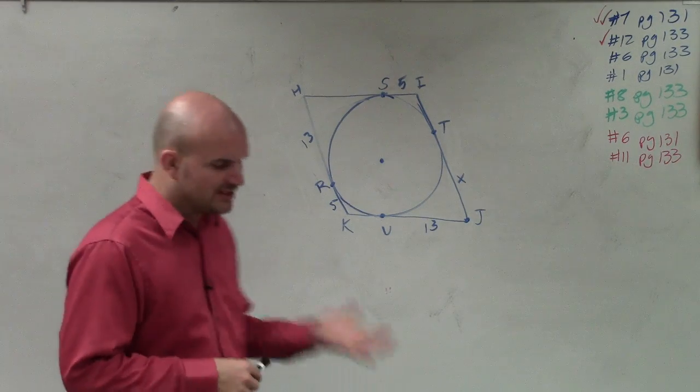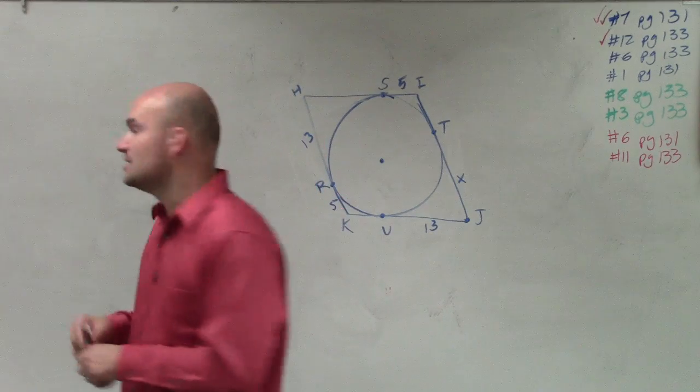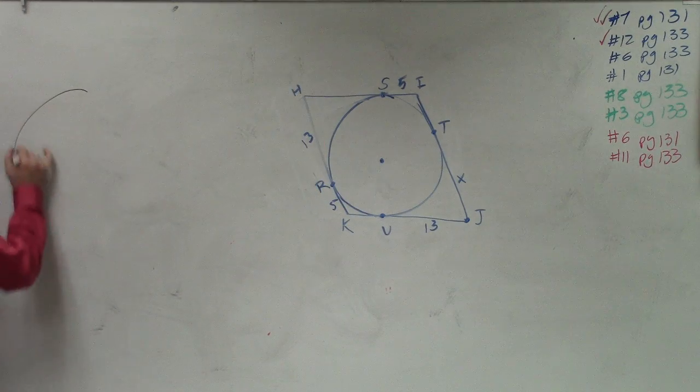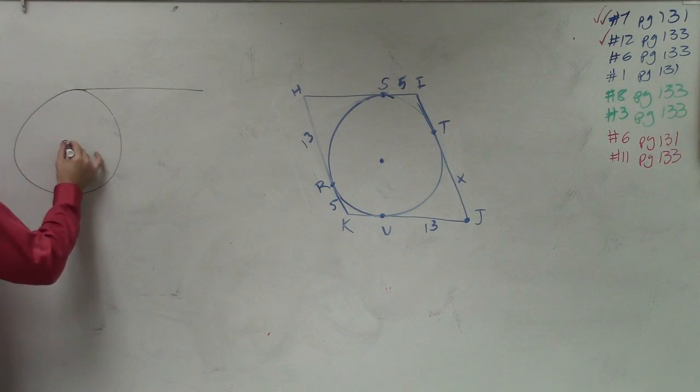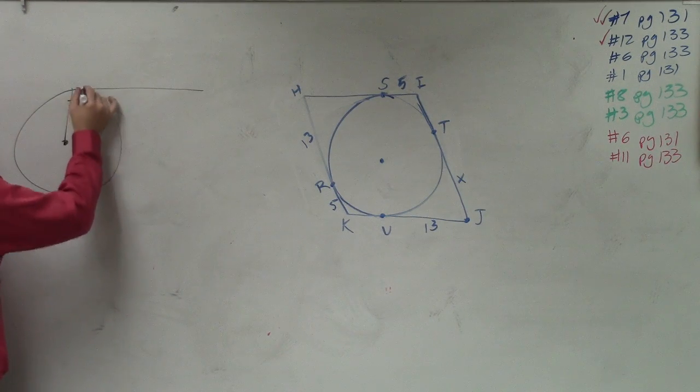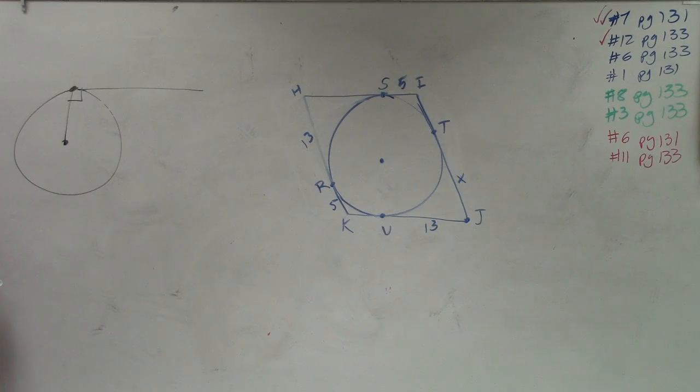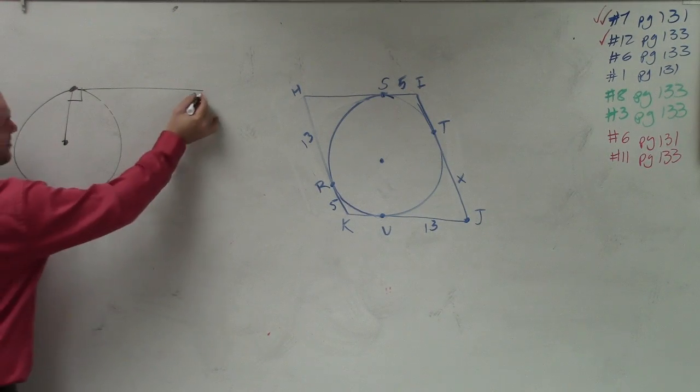So if you were like Jared and you just wrote down the notes, we discussed a couple things. When you guys have a tangent line, we know that a tangent line was perpendicular and it only intersects the circle at one point. Then we discussed,